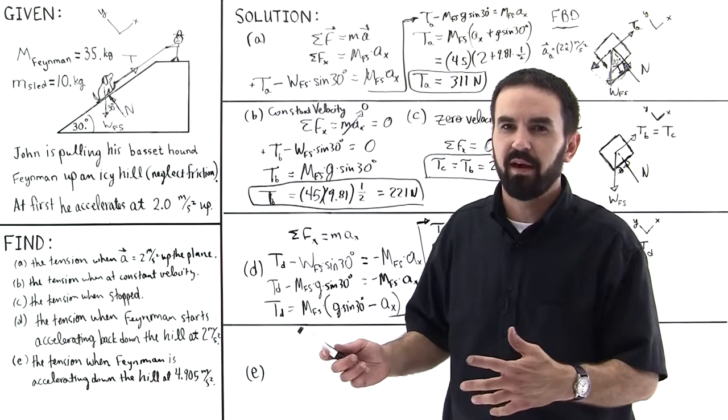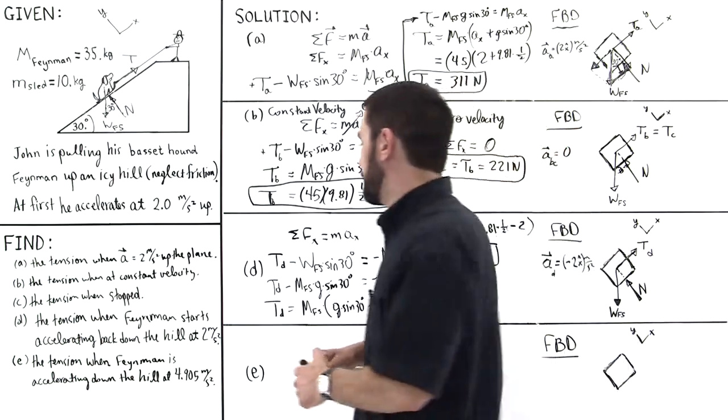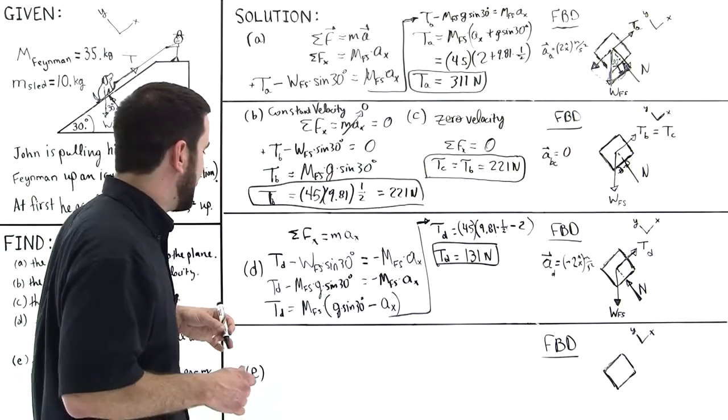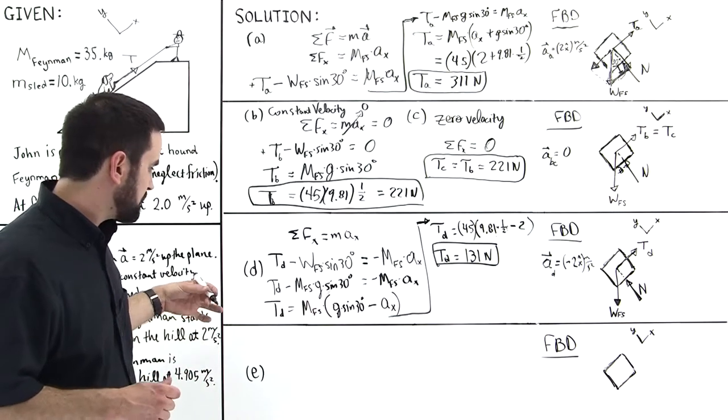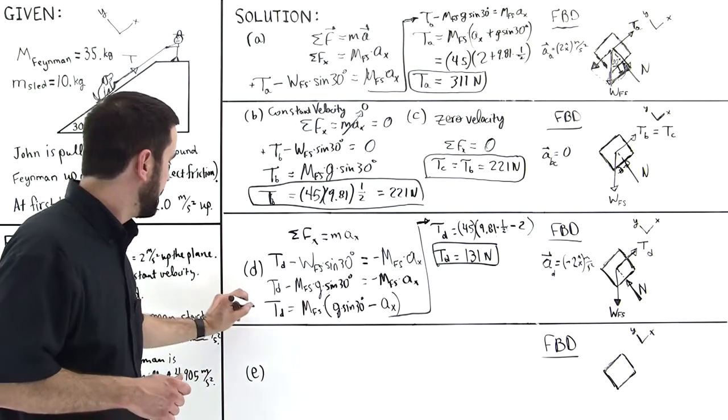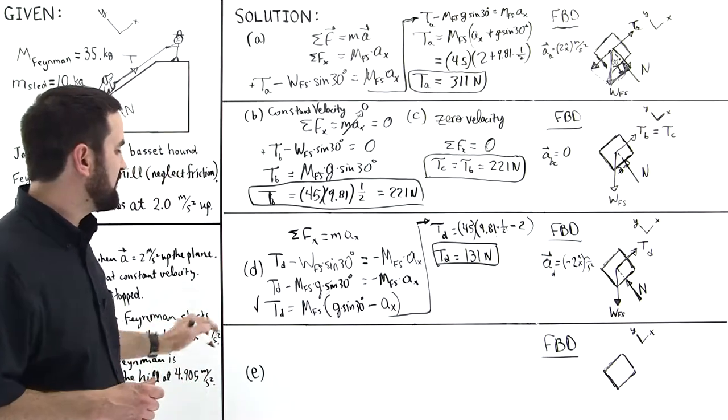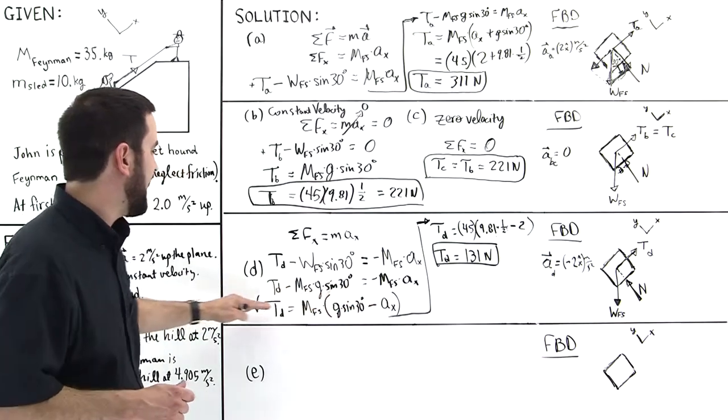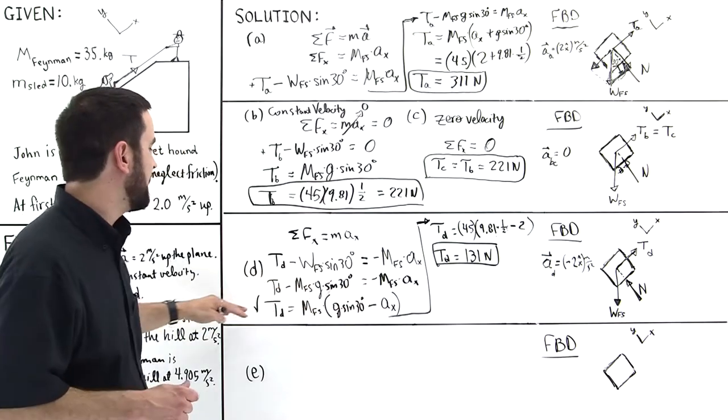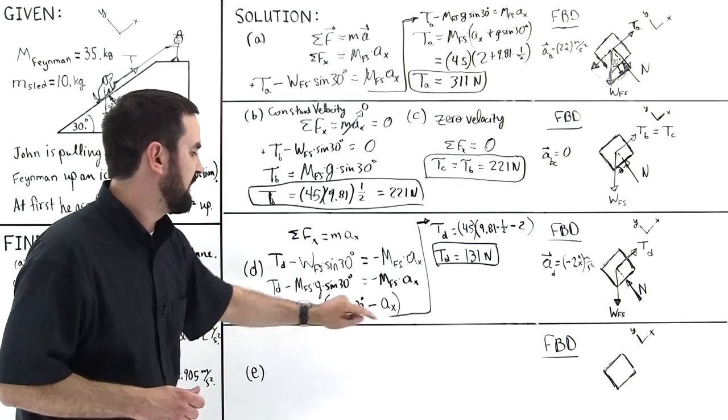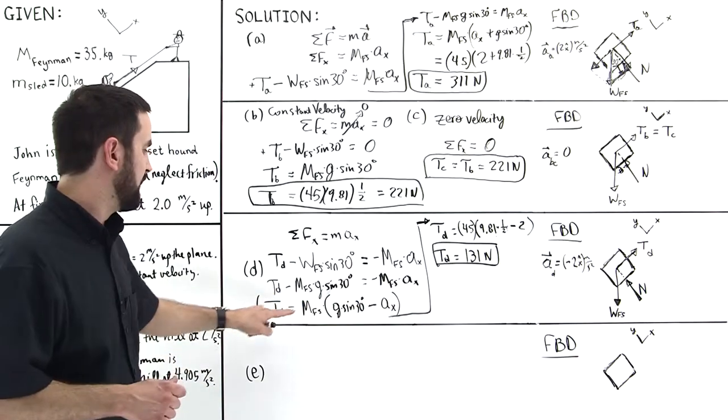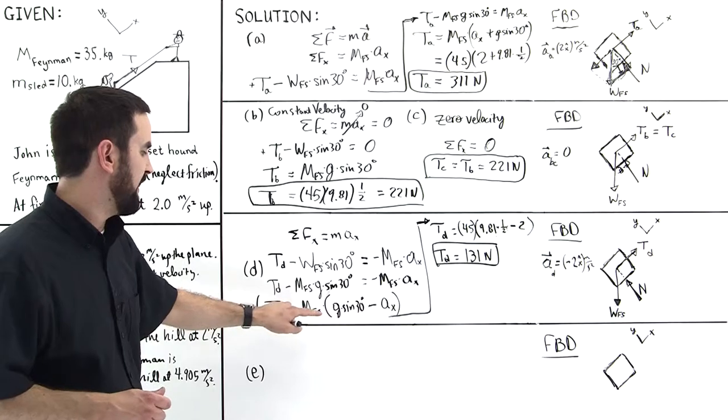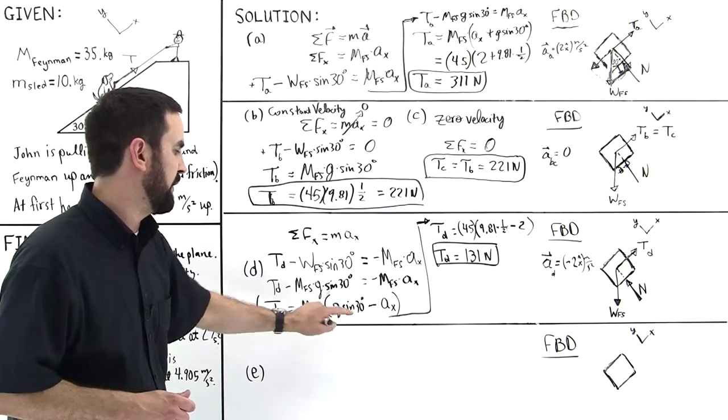It might not be 4.905 because I've carefully selected 4.905 so that Feynman is just sliding down freely. But it could be 3. It could be anything. So if you look at this equation right here, this equation is for Feynman sliding down the incline with some arbitrary acceleration x. All these other numbers are given. We know this is 45. We know this is 9.81. We know this is 1.5.